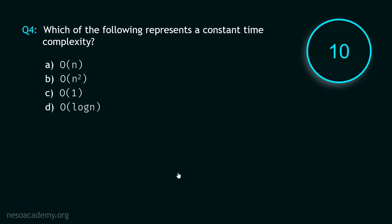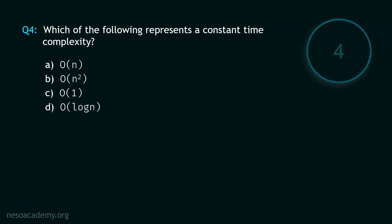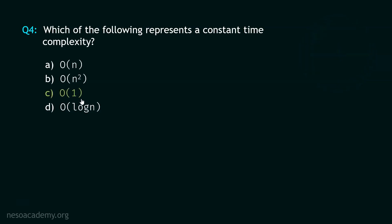Question number 4. Your time starts now. Stop. Out of these big O run times, clearly O(1) represents the constant time complexity, and hence option C is the correct option.